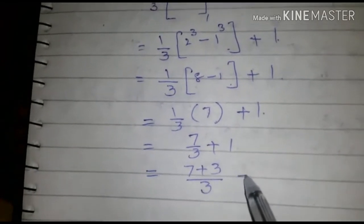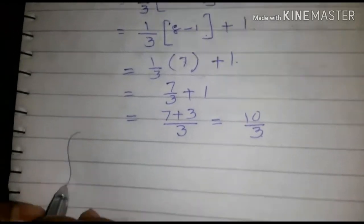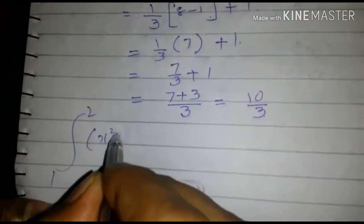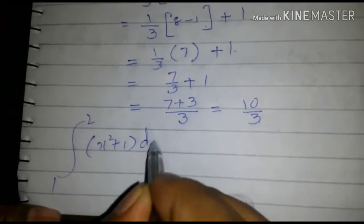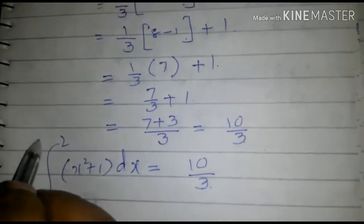over 3 which is equal to 10 over 3. Integral 1 to 2 x square plus 1 dx is equal to 10 over 3.